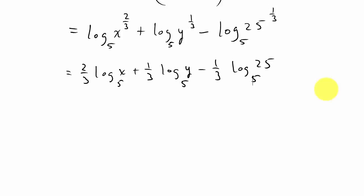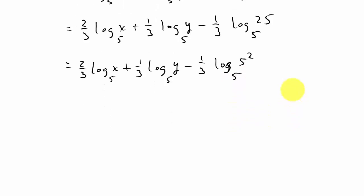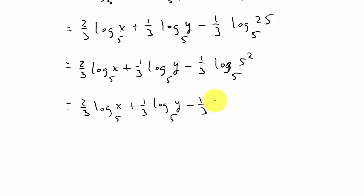It looks like we're done, but notice we have base five and 25 can be written as five squared. So rewrite: two-thirds log X base five plus one-third log Y base five minus one-third times log of five squared with base five. Since the base and the argument's base match, that evaluates to the exponent two, and one-third times two is two-thirds.